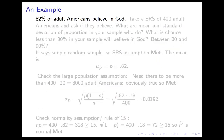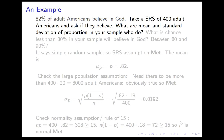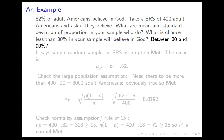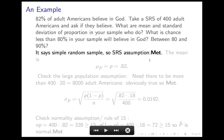Let's see how this works in an example. 82% of adult Americans believe in God, and we're taking a simple random sample of 400 adults asking if they believe in God. We want the mean and standard deviation of P-hat, and the probability of getting fewer than 80% in the sample. The first assumption: it says in the problem we took a simple random sample — met. The mean of P-hat is P = 0.82.